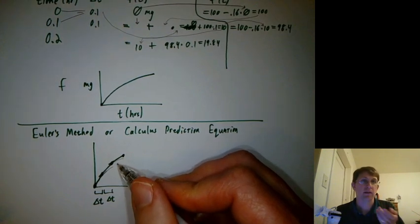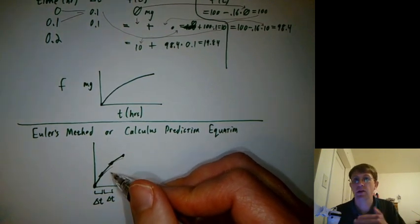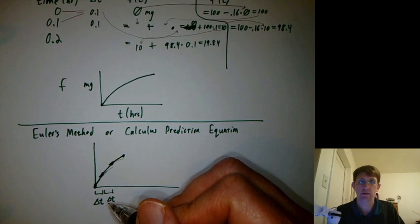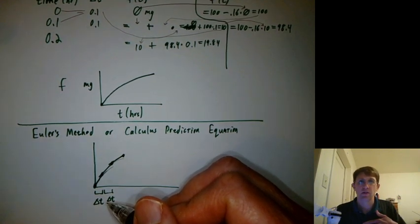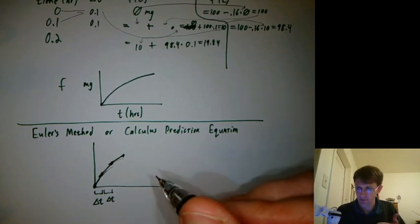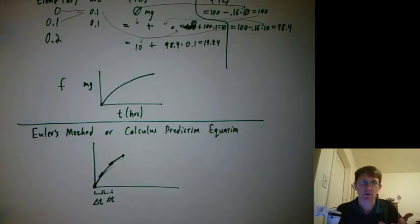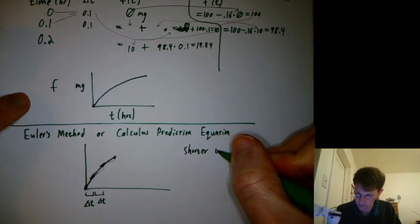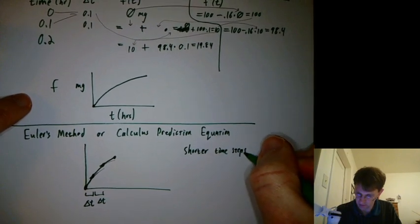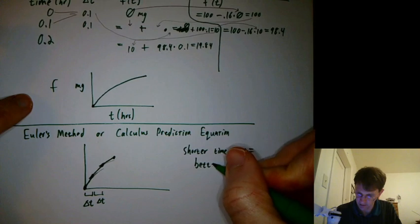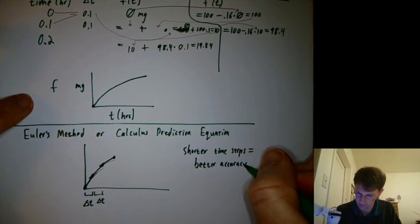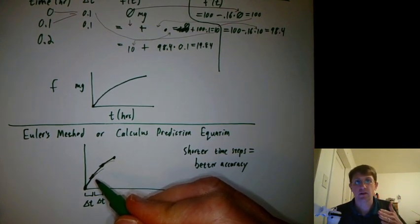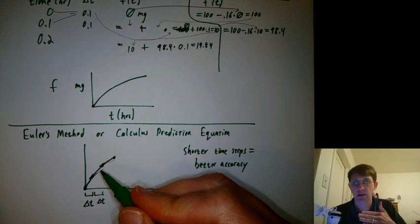So the shorter time steps you take, the less opportunity the real function has to curve away from the tangent line, and the more accurate your results will be. So in general, we like to take short time steps. If we can, then you have to take a lot of them. And if it's a serious problem, your computation might slow down. But in Excel, in Calc 1, we're not too worried about that. So you can say shorter time steps gives better accuracy. So Euler's method is basically just project the tangent line out a little bit, follow it, and then get a new tangent line, project that out, follow it, etc.